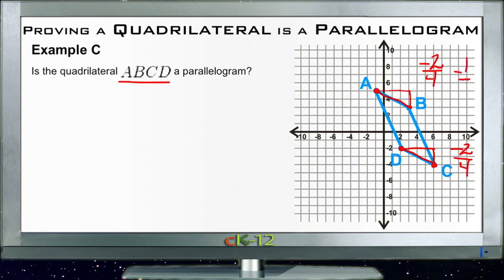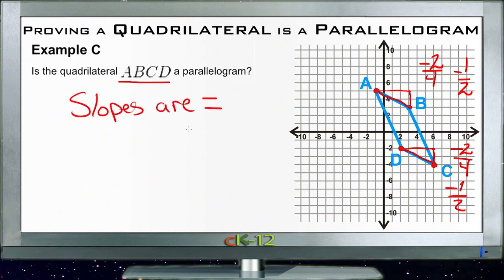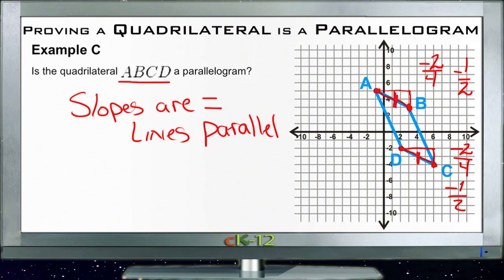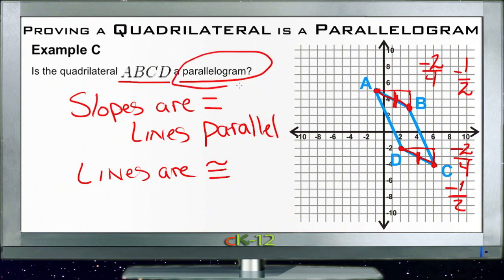Both lines have a rise of -2 and a run of 4, which simplifies to a slope of -1/2. Since the slopes are equal, the lines are parallel. And since I traveled exactly the same horizontal and vertical distance from one endpoint to the other on both lines, they are the same length — meaning they're congruent. Since the two opposite sides are both parallel and congruent, ABCD is indeed a parallelogram.